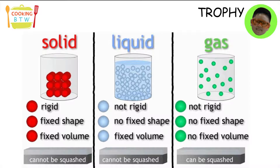Solid examples include ice or glass. Liquid examples include juice, water, or oil. Gas examples include steam, oxygen, and carbon dioxide.